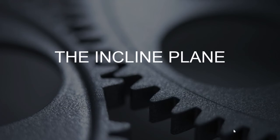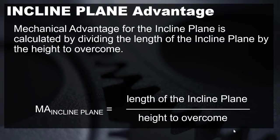In this video, we're going to learn how to calculate the mechanical advantage for the inclined plane. The mechanical advantage for the inclined plane is calculated by dividing the length of the inclined plane by the height that it has to overcome. We can see that in the equation below.